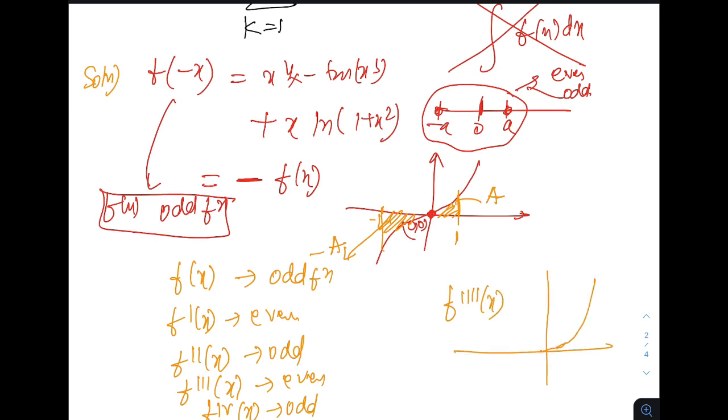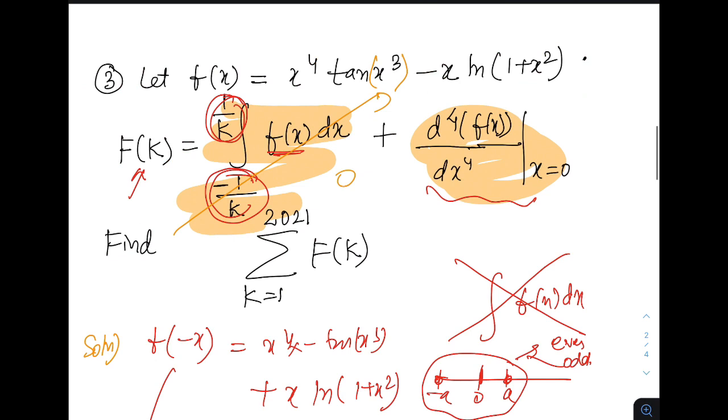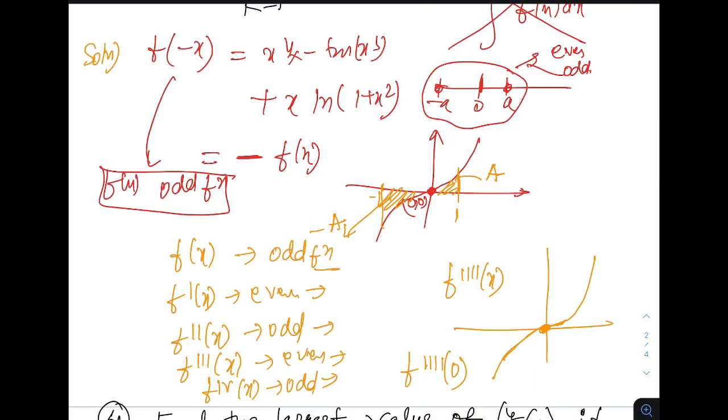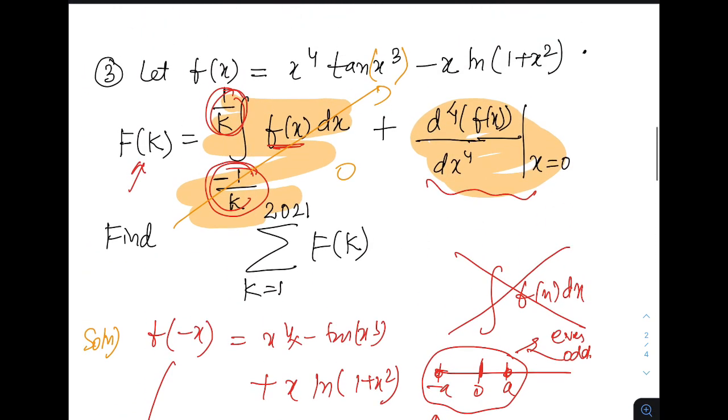So again I can tell whatever may be the fourth derivative of x, it's again an odd function. Obviously it has to pass through origin. Let's call fourth derivative is g of x. It's an odd function. So g of 0 must be 0. Because the function is continuous and differentiable in its domain here. Right. So this part still kicks off.